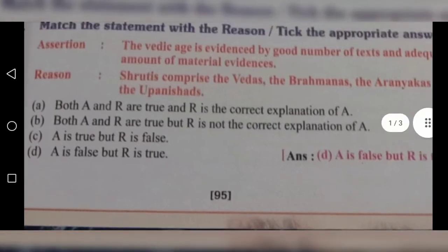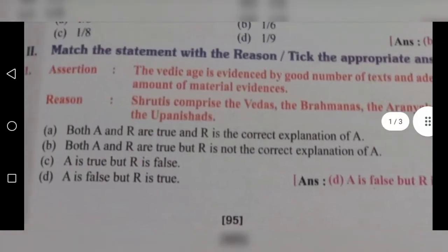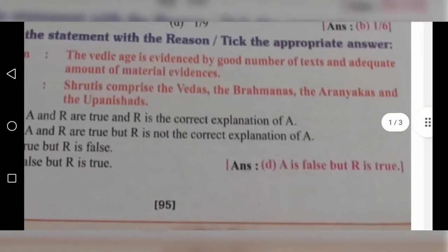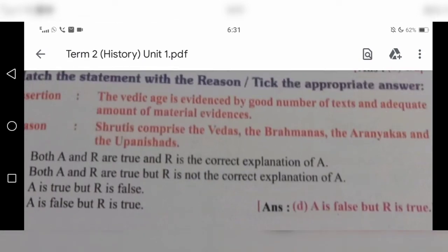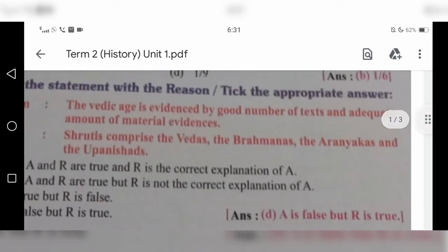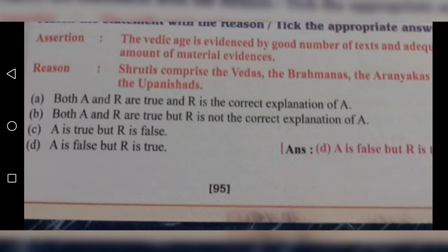There are four options given. Option D is the correct answer. What is option D, children? A is false, but R is true. A is the assertion, R is the reason. The assertion — the Vedic age is evidenced by a good number of texts and adequate amount of material evidences — is false. But the reason — Shrutis comprise the Vedas, the Brahmanas, the Aranyakas and the Upanishads — is true. So option D is the correct answer.